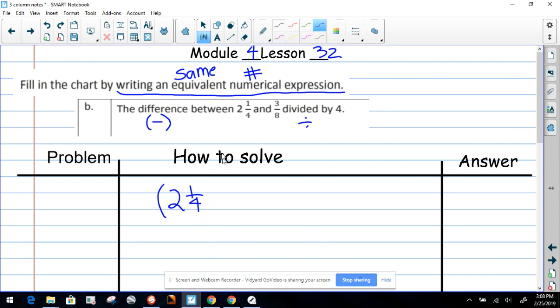Two and one-fourth, and it says the difference, which means minus three-eighths, divided by four. Okay, my friends, that's the answer. The numerical expression matches the written expression.